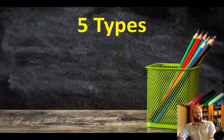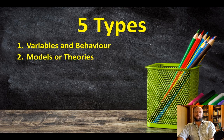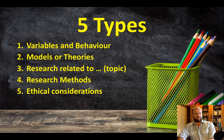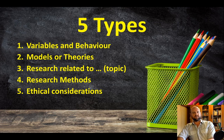So those are the five types: variables and behavior, models or theories, research related to a particular topic, research methods, and ethical considerations. All IB psychology exam questions can be lumped into one of these five types.